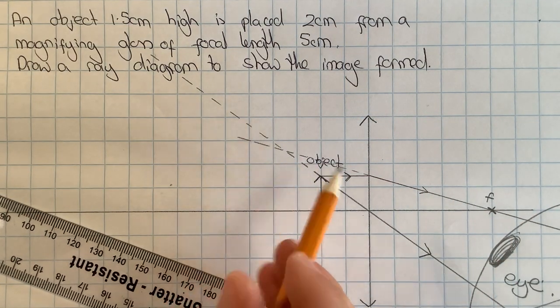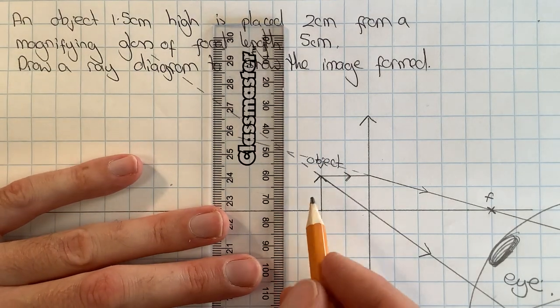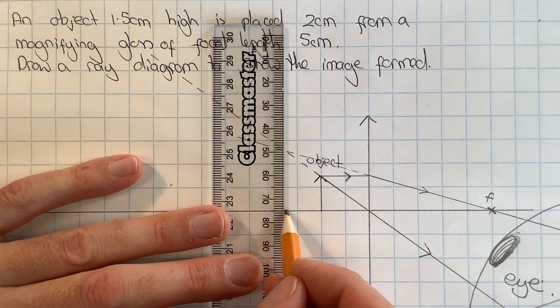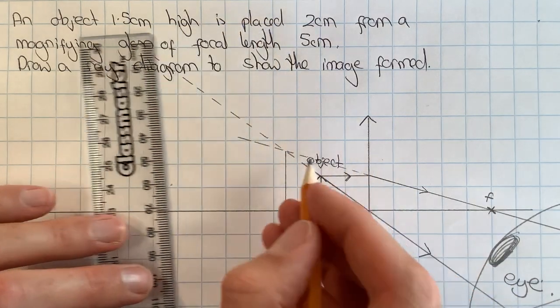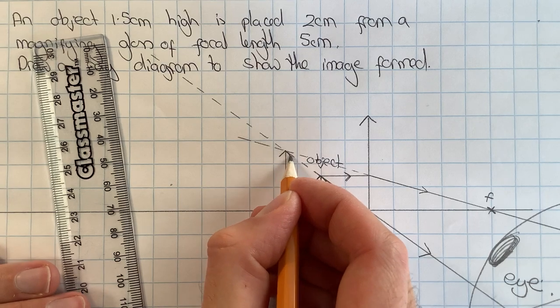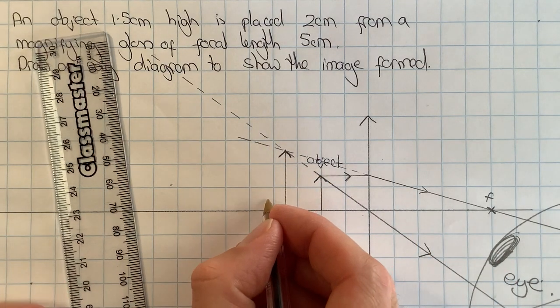So I can now put my ruler and draw my image coming up from the principal axis to where those virtual rays cross, and then I can label that as my image.